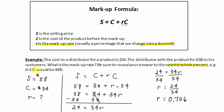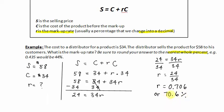Meaning 0.435 would be 44%. So if I rewrote this as a percentage, I would get 70.6%. But rounding to the nearest whole percent, 70.6 would round up to 71%. Therefore, the markup rate is 71%.